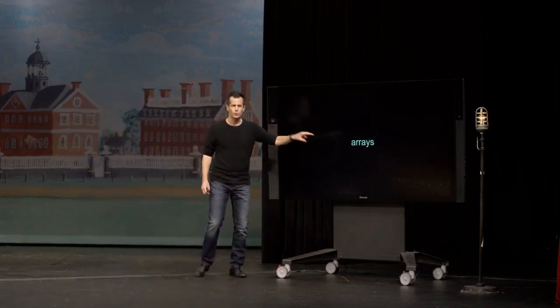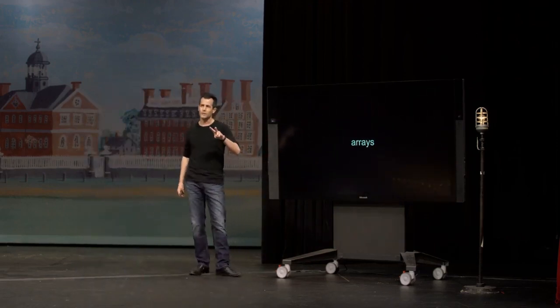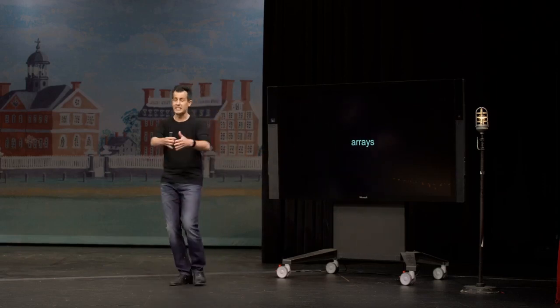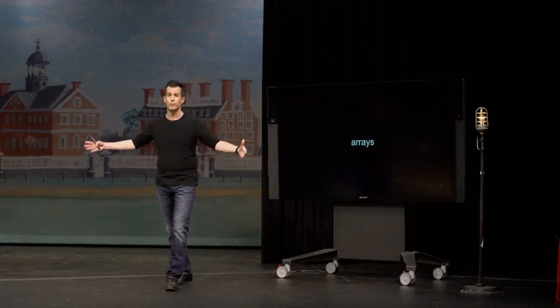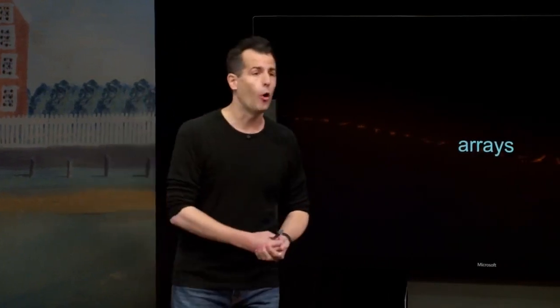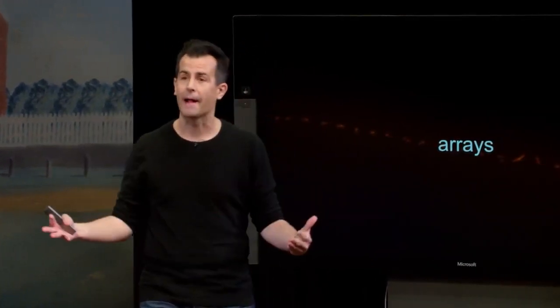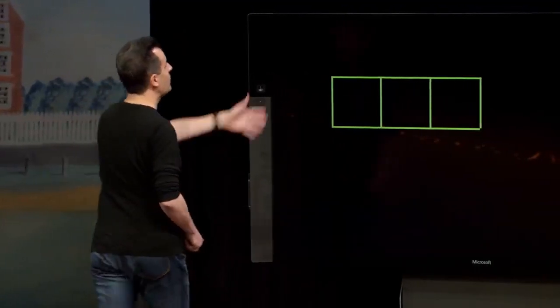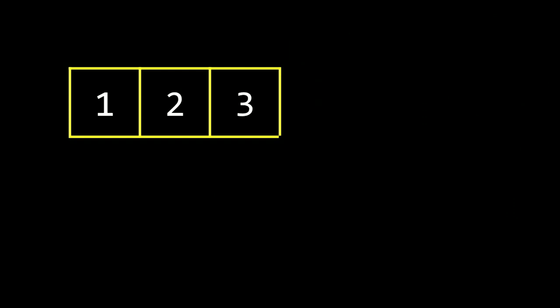Recall in week two, which was our second week of playing with C, we introduced you to the notion of an array. An array is just a contiguous sequence of memory in which you can store a whole bunch of integers back to back, or maybe a whole bunch of chars back to back. Those arrays might be represented pictorially like this — an array of size three containing one, two, three.